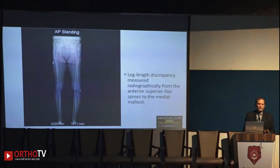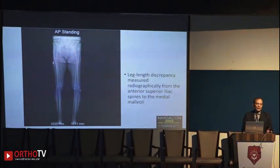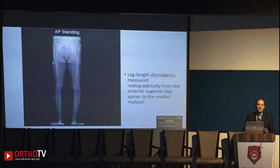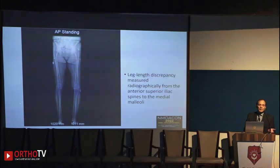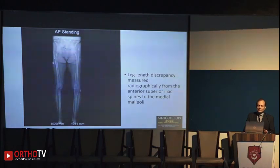When you calculate limb length, you take a fixed point on the pelvis — like the teardrop or the anterior superior iliac spine — and also take a fixed point distally, maybe the lesser trochanter. If you have a full scanogram, you can take the medial malleolus as we do in clinical examination, and calculate the exact limb length discrepancy based on radiology.